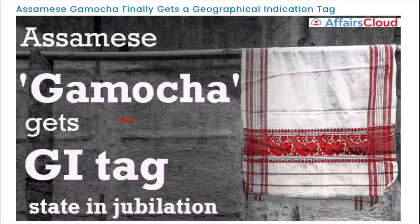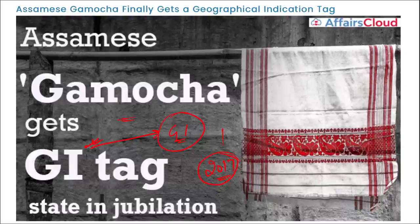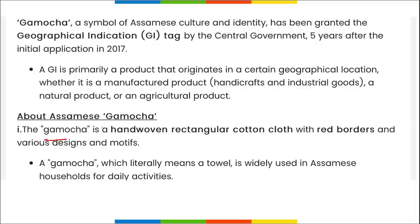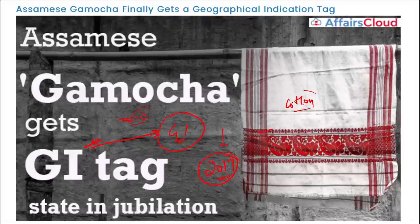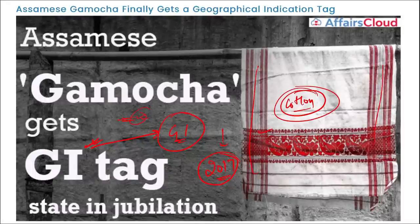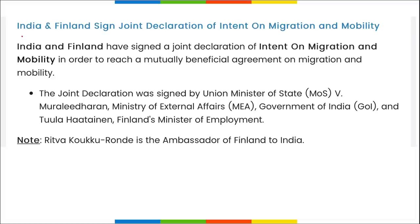Gamucha — a symbol of Assamese culture and identity — has recently been granted a GI (Geographical Indication) tag by the Central Government, five years after the application was initially received in 2017. A GI tag is given to a product that originates in a specific geographical location. The Gamucha is a hand-woven rectangular cotton cloth with red borders and various designs and motifs.